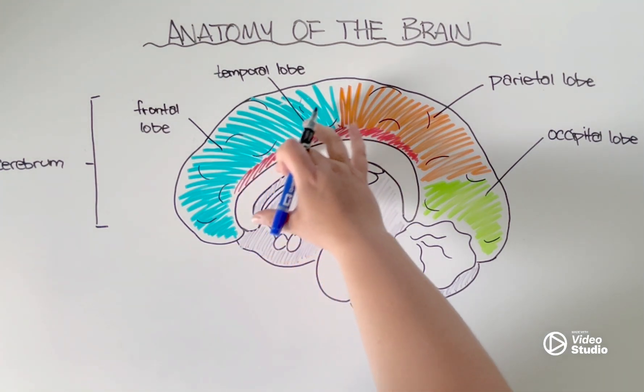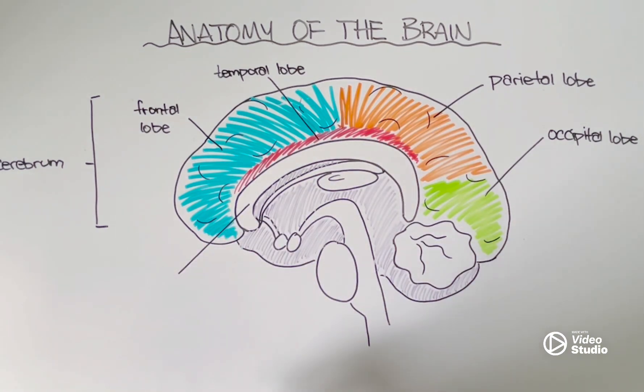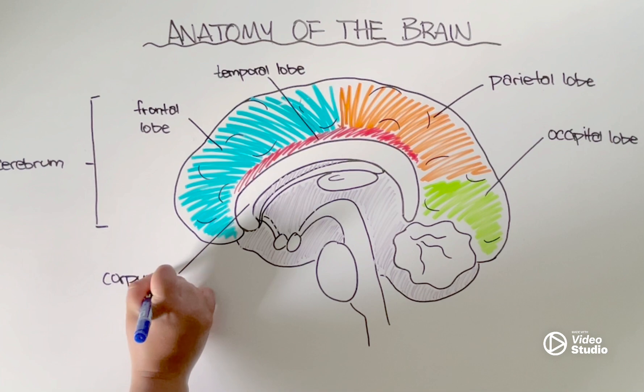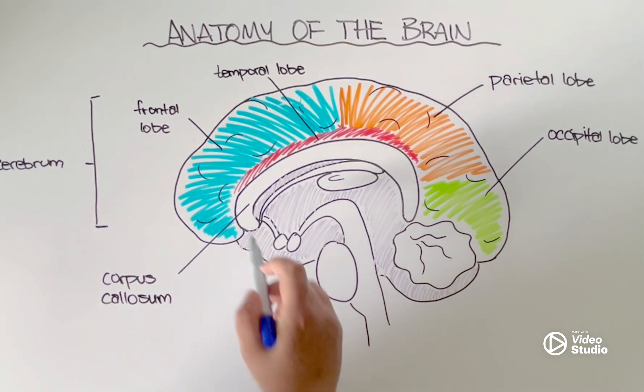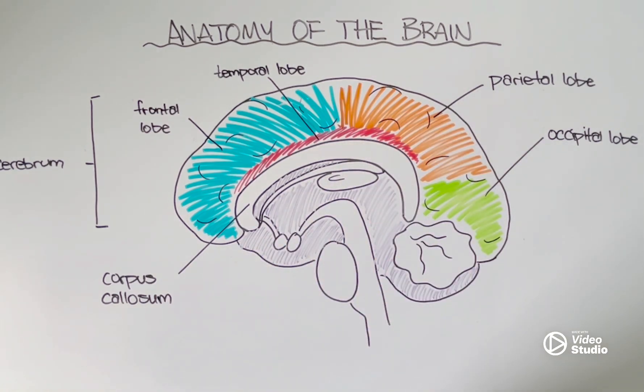So, starting with this large piece of white matter known as the corpus callosum. The corpus callosum is a highly myelinated piece of tissue that just serves to connect the left and the right hemispheres of our brains.